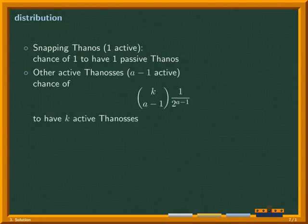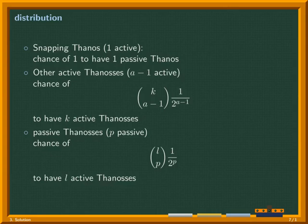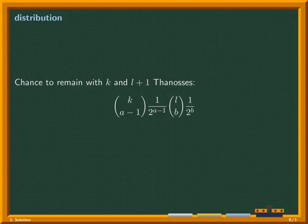All other active Thanoses, so our original number of active Thanoses minus one, follow the distribution described in the previous slide. Same goes for all passive Thanoses. We can combine the previous equations to write what the chances are to remain with exactly k active and l plus one passive Thanoses. Let us remember this equation.